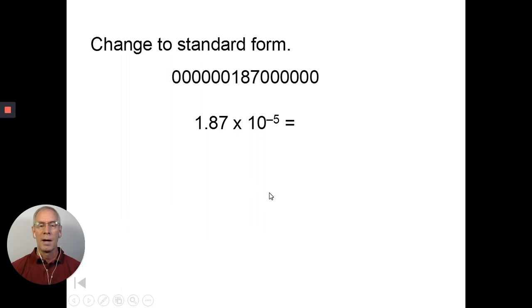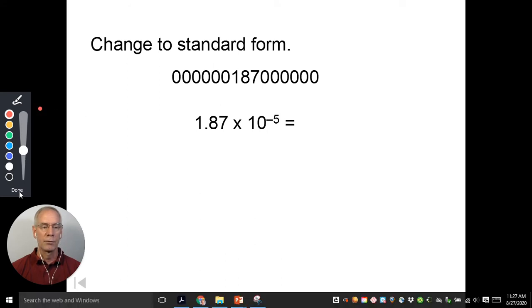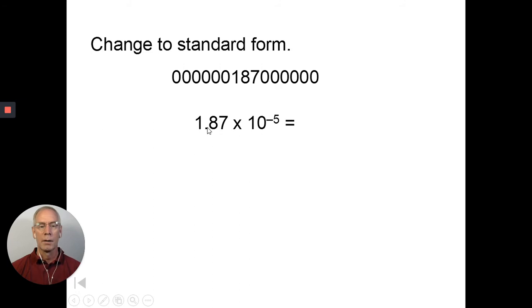So here's what I would do. I would, at least starting off, write this out 1.87, 10 to the negative fifth. And then maybe I'll go ahead and get my little drawing tool here. Actually, I think it's going to be on there for us, so we don't have to. So I'll say I'm done here. We start with a decimal here, 1.87.